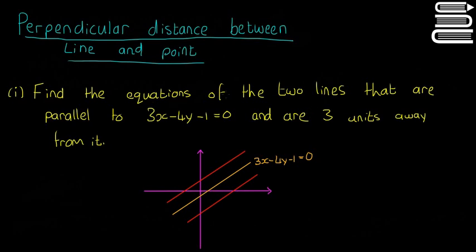It's asking us to find the equations of the two lines that are parallel to this line here — 3x minus 4y minus 1 equals 0. So I've drawn the orange line there. That's this line here, and the two red lines are the lines they're talking about. We need to find the equations of those two red lines that are parallel to this orange one and are three units away from it. So that means the distance there is going to be 3 and the distance there is going to be 3, and they should be perpendicular distances as well.